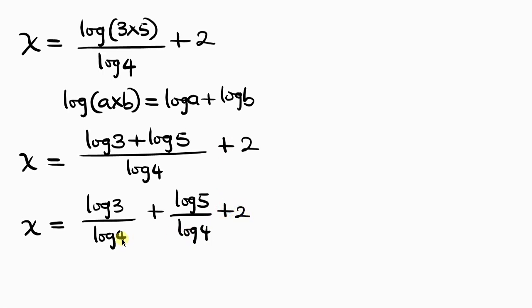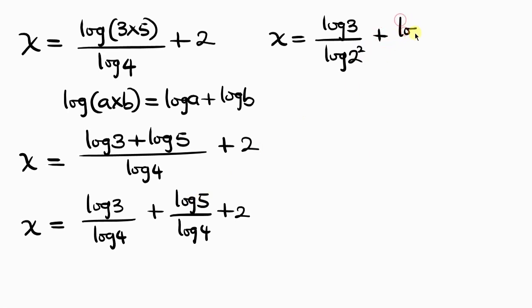Now notice that 4 can be written as 2 squared. So x equals log 3 over log(2²), plus log 5 over log(2²), plus 2.